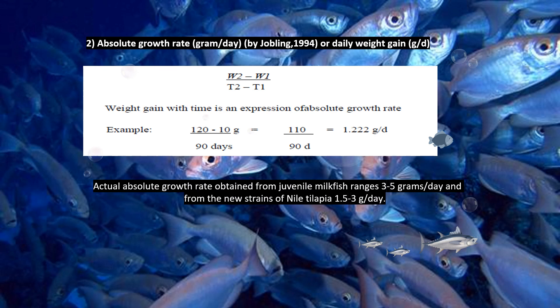Absolute growth rate, expressed in grams per day or daily weight gain, uses the formula: Weight 2 minus Weight 1 over T2 minus T1. Weight gain with time is an expression of absolute growth rate. Example: Weight 2 is 120 grams, Weight 1 is 10 grams, so 120 minus 10 equals 110 grams over 90 days. Therefore, 110 over 90 equals 1.22 grams per day.